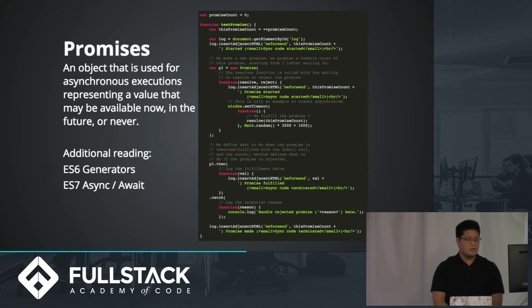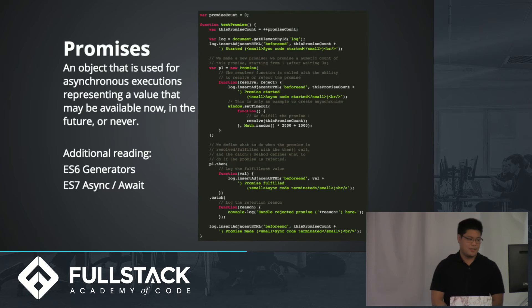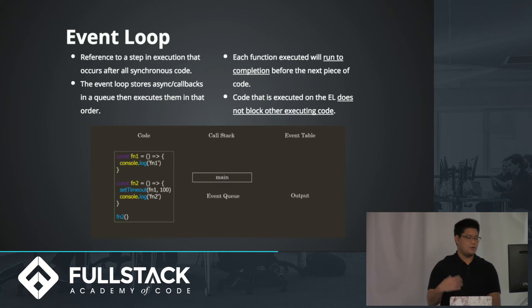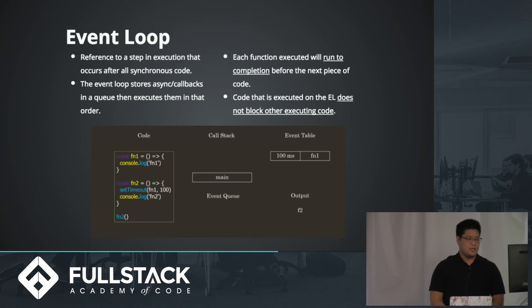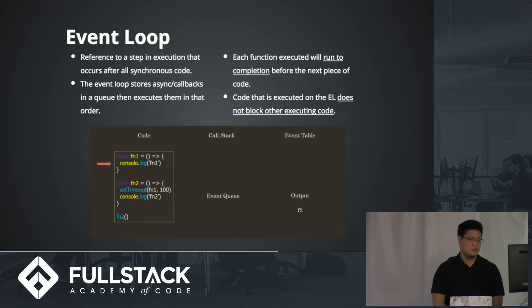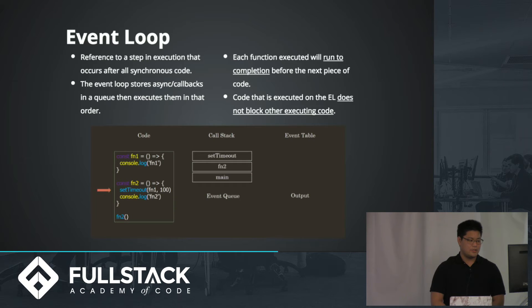With that, there are a few more things we can use. ES6 introduced generators and iterators, and even with ES7 they're implementing stuff like async and await, which will do the same thing but more native to the language. To expand on what we use in JavaScript, we have the event loop — it refers to a step in execution that occurs after all the synchronous code happens. The event loop is a queue where if you do something like a setTimeout or an asynchronous call, it gets put onto the event queue. So if you do a setTimeout for 100 milliseconds, it gets processed by the API, then put onto the event queue, and then after all the synchronous code runs, it will run that.